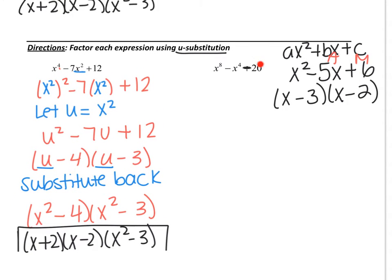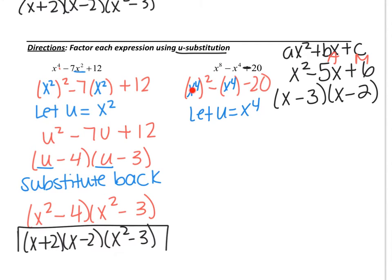In this problem using u-substitution, we want to write it as something squared minus something minus 20. There's no number in front since there's no coefficient. So what number squared gives me x to the eighth? x to the fourth. We'll leave the middle x to the fourth term as is. So let u equal x to the fourth. Every time you see x to the fourth, put a u, giving you u squared minus u minus 20.